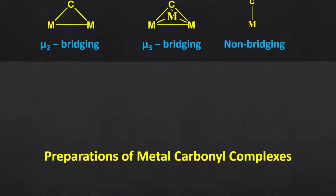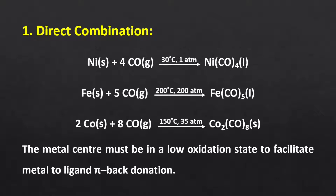The next topic is the preparation of metal carbonyl complexes. They can be prepared mainly using five methods. The first method is direct combination. Nickel tetracarbonyl, iron pentacarbonyl, and dicobalt octacarbonyl complexes can be easily synthesized by the action of carbon monoxide on finely divided metal at a suitable temperature and pressure. The primary requirement is that the metal center must be in a reduced and low oxidation state to facilitate carbonyl binding through metal-to-ligand pi-backdonation.